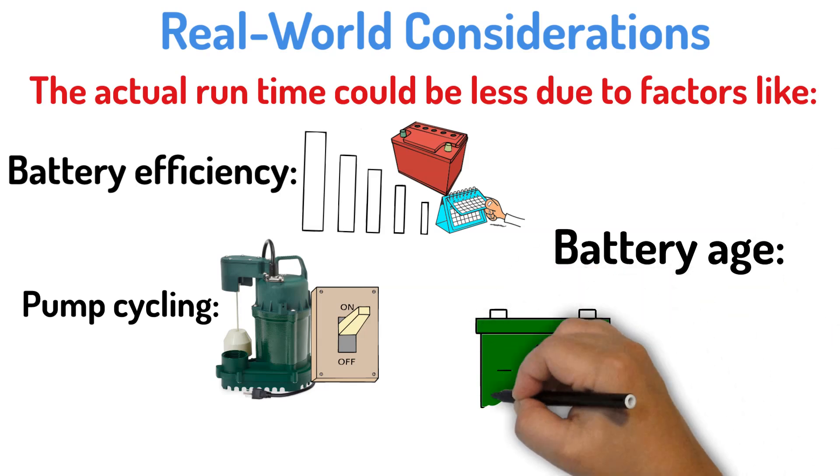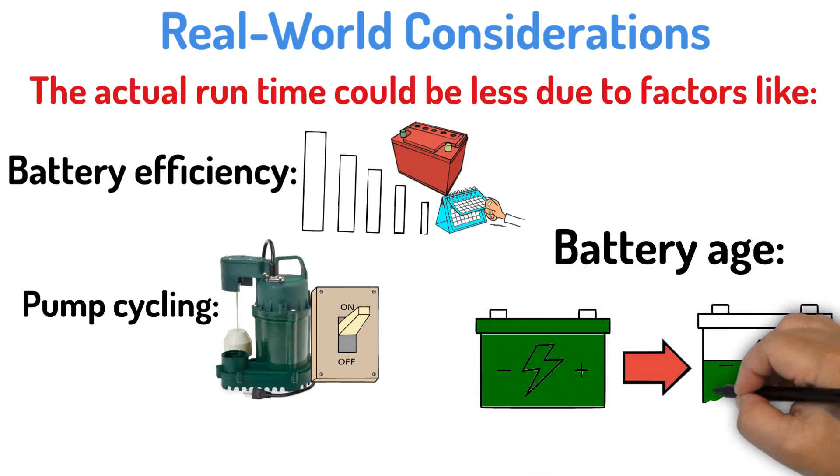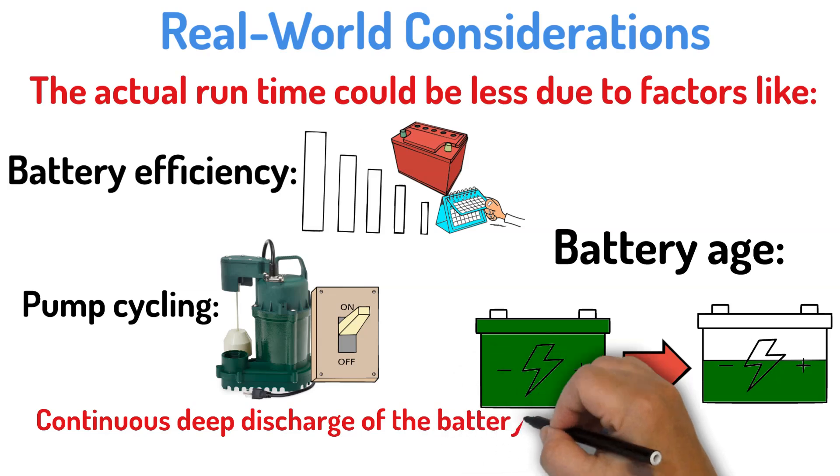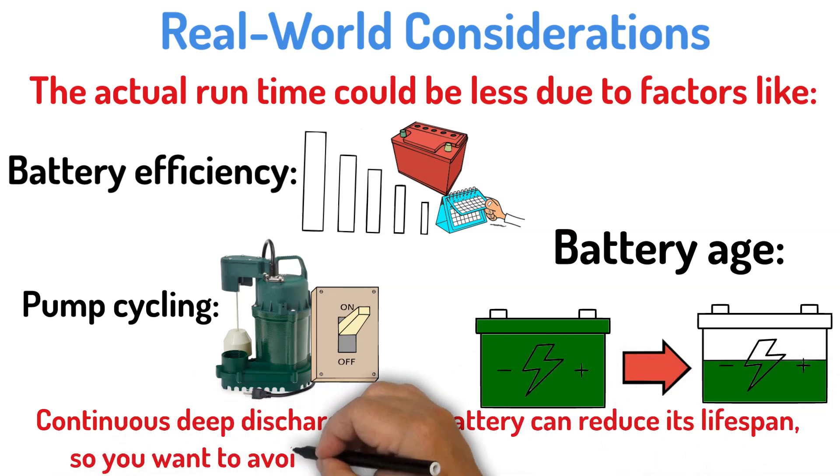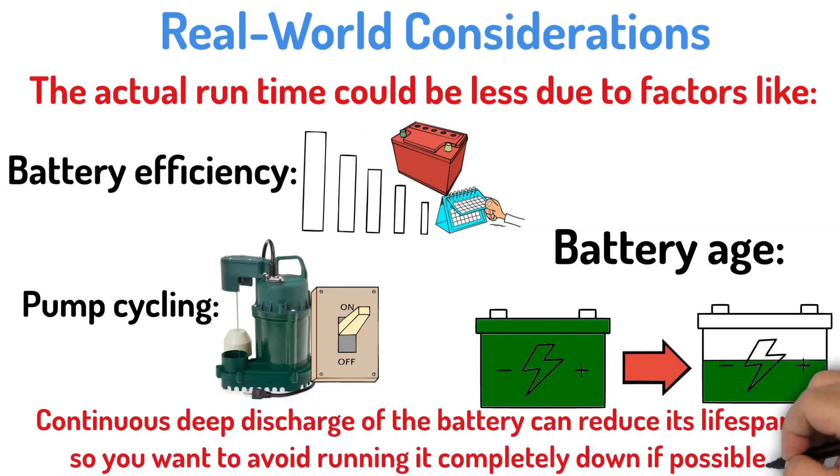Battery age. Older batteries tend to hold less charge. Additionally, continuous deep discharge of the battery can reduce its lifespan, so you want to avoid running it completely down if possible.